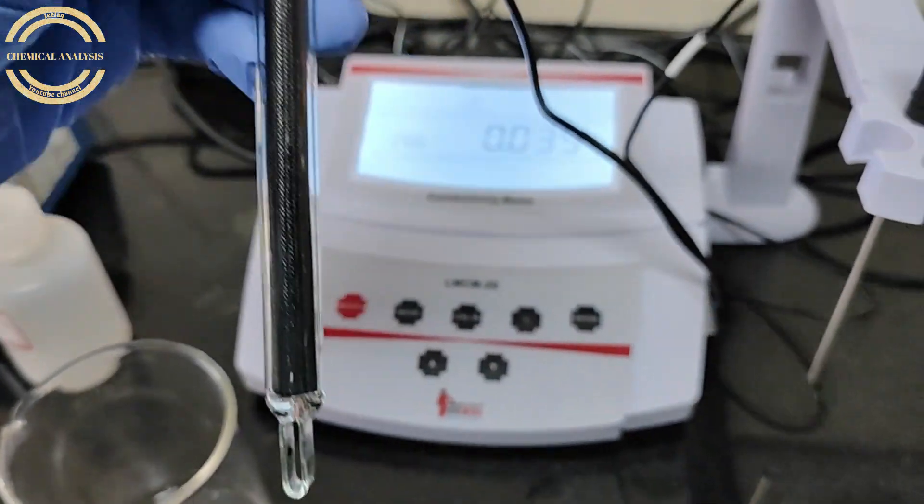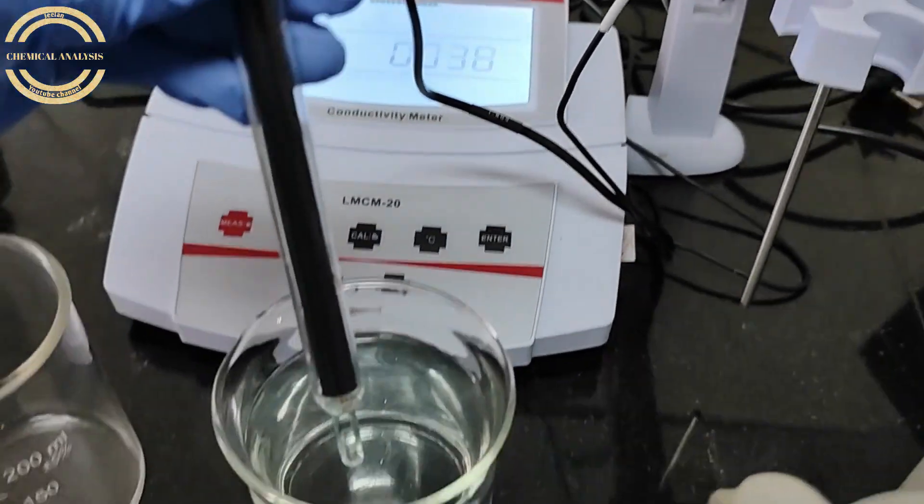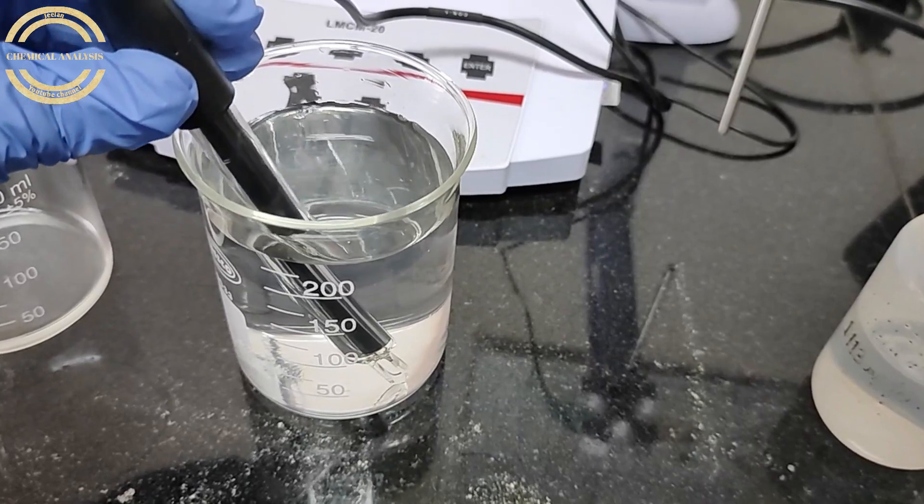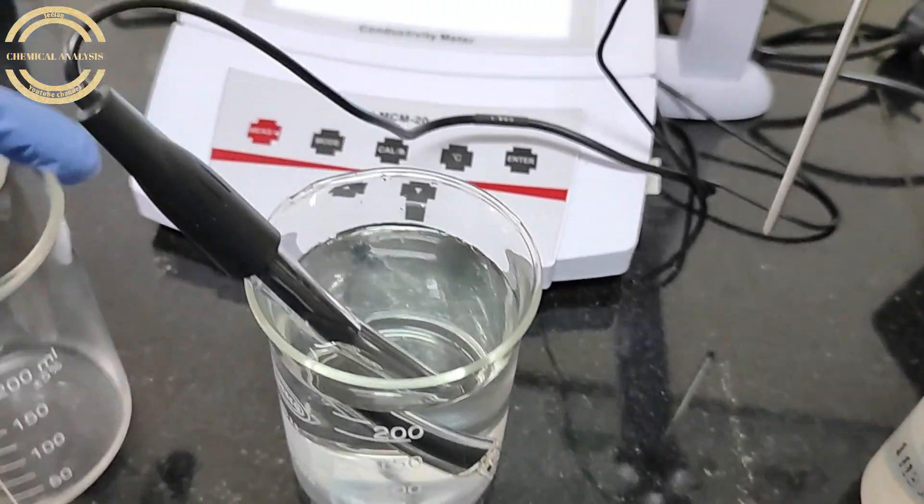Put the electrode into the sample and check the reading. Now the sample reading is shown. The conductivity unit is microsiemens per centimeter.